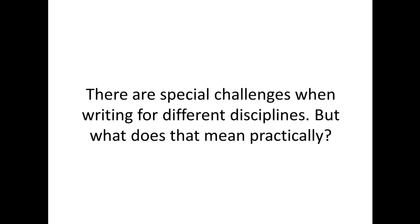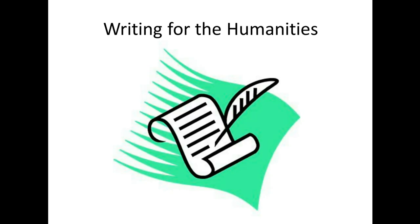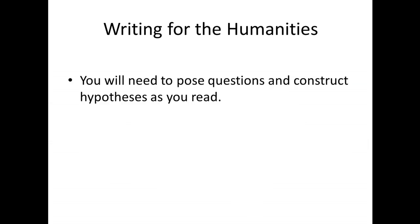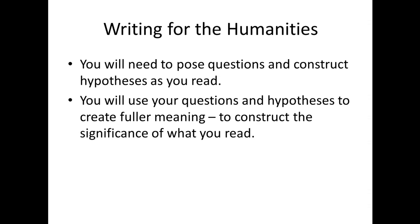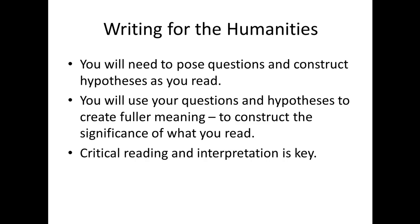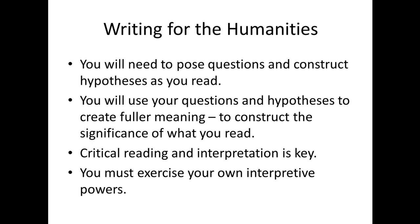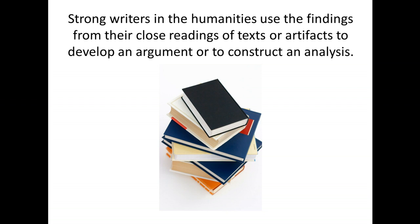There are special challenges when writing for different disciplines. When writing for the humanities, you will need to pose questions and construct hypotheses as you read. You will use your questions and hypotheses to create fuller meaning — that is, to construct the significance of what you read. Critical reading and interpretation is key, and you must exercise your own interpretive powers. Strong writers in the humanities use findings from their close readings of texts or artifacts to develop an argument or construct an analysis.